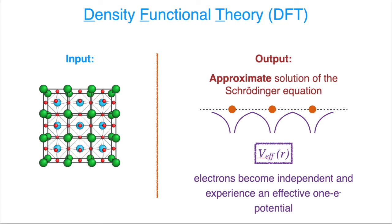When we perform DFT calculations, we are solving approximately the Schrödinger equation. The approximation is such that the electrons become effectively decoupled. First, we calculate self-consistently an effective one-electron potential which the electrons experience. Although it's a very complicated object containing information about all other electrons in the system, it's still a single-electron potential, so there is no explicit interaction between electrons — they are effectively decoupled. This picture works really well for most materials, but for certain classes of systems it struggles.